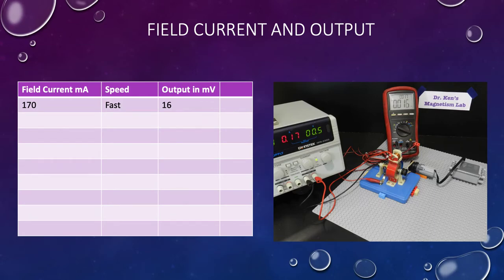Let's look at the first one. We've got our generator spinning, you can see the blur of the armature as it spins around. Our voltage is about 16 millivolts. But look at our armature current, the field current set very low at 170 milliamps. This is relatively low and our voltage output corresponds, also low.